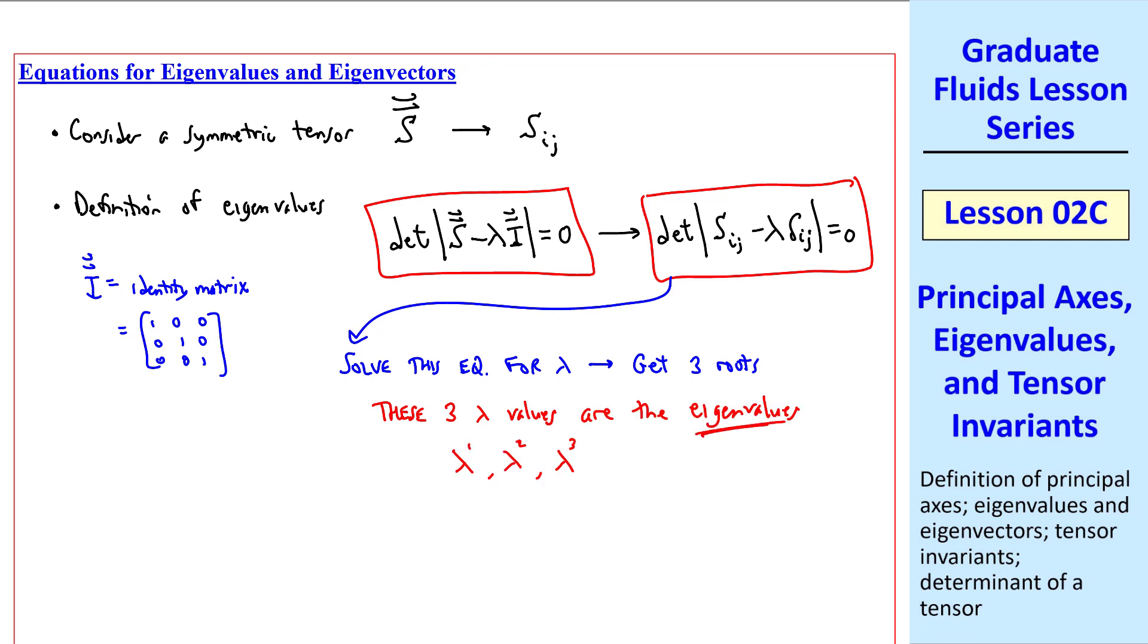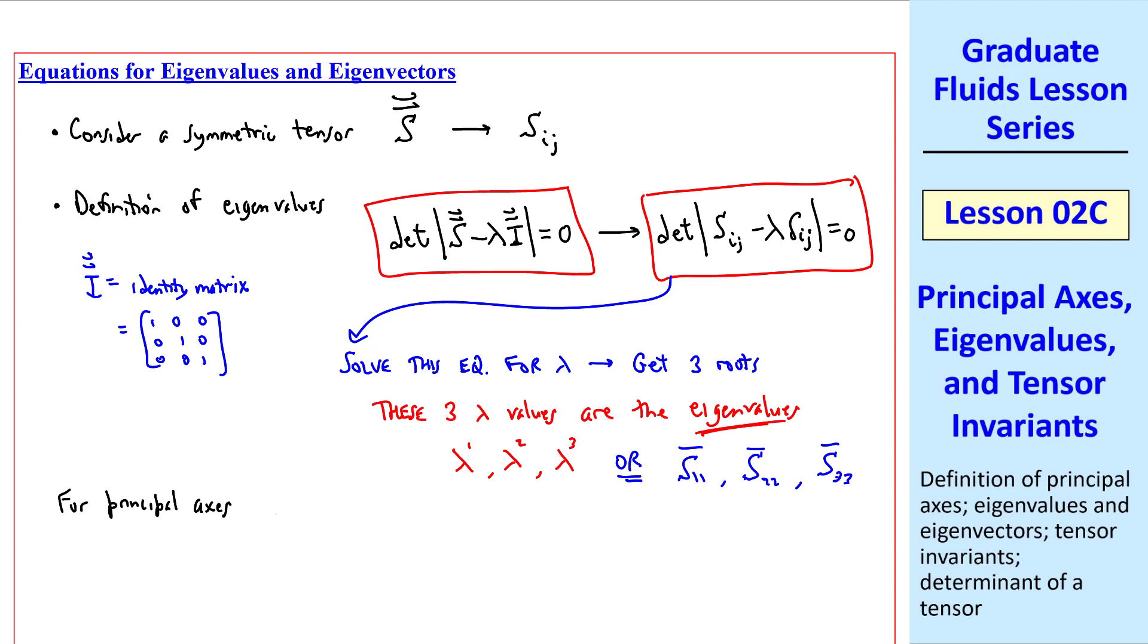Later on, this will be the strain rate tensor, which we represent in tensor notation as capital S of ij. Here's the definition of eigenvalues. In vector notation, we determine lambda by setting the determinant of S minus lambda times the identity matrix to zero. In tensor notation, we write this as the determinant of Sij minus lambda delta ij equals zero. These two equations represent the same thing. Sticking with tensor notation, we solve this equation for lambda. You get three roots. Sometimes there are repeating roots. These three lambda values are the eigenvalues.